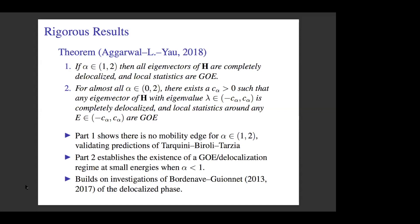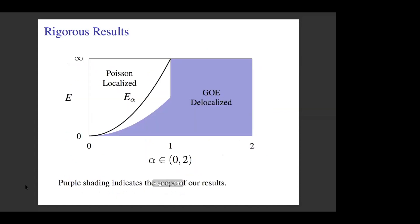We're not so lucky for alpha between 0 and 1. Here we can only prove the existence of a regime - a small window of energies near 0 where you have delocalization. In particular, we do not know that this small interval extends to the conjectured mobility edge. If you look schematically at these results, the shaded areas represent what is known rigorously. For alpha between 1 and 2, we have the delocalized phase everywhere. For alpha between 0 and 1, we have a small region of delocalization known rigorously. We don't know much about the localized phase, although there are some results known for alpha between 0 and 2 thirds. Between 2 thirds and 1, we know nothing.